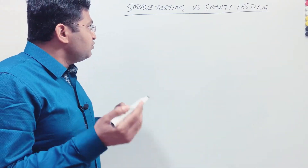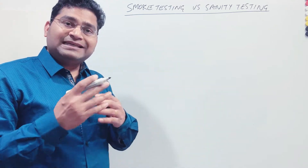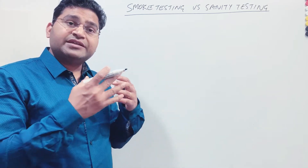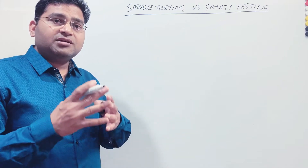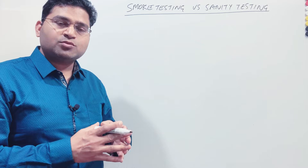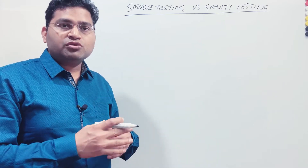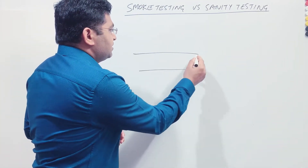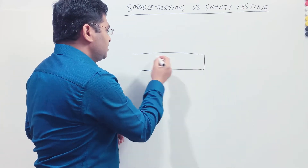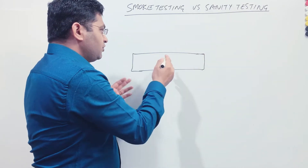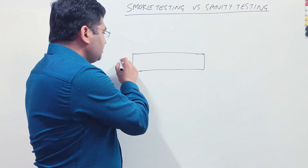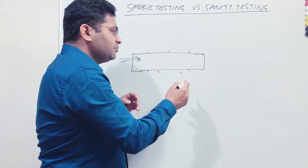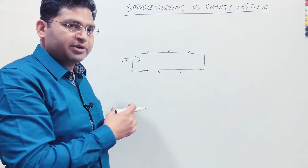Both sanity and smoke testing are related to builds. The word 'smoke' is very important to understand. Smoke testing came from the smoke testing done by plumbers. Plumbers used to perform smoke tests whenever they wanted to find any leakage in the pipes. They would seal the pipe from one side and push smoke into it — if smoke came out of the pipe, they recognized there was a leakage.